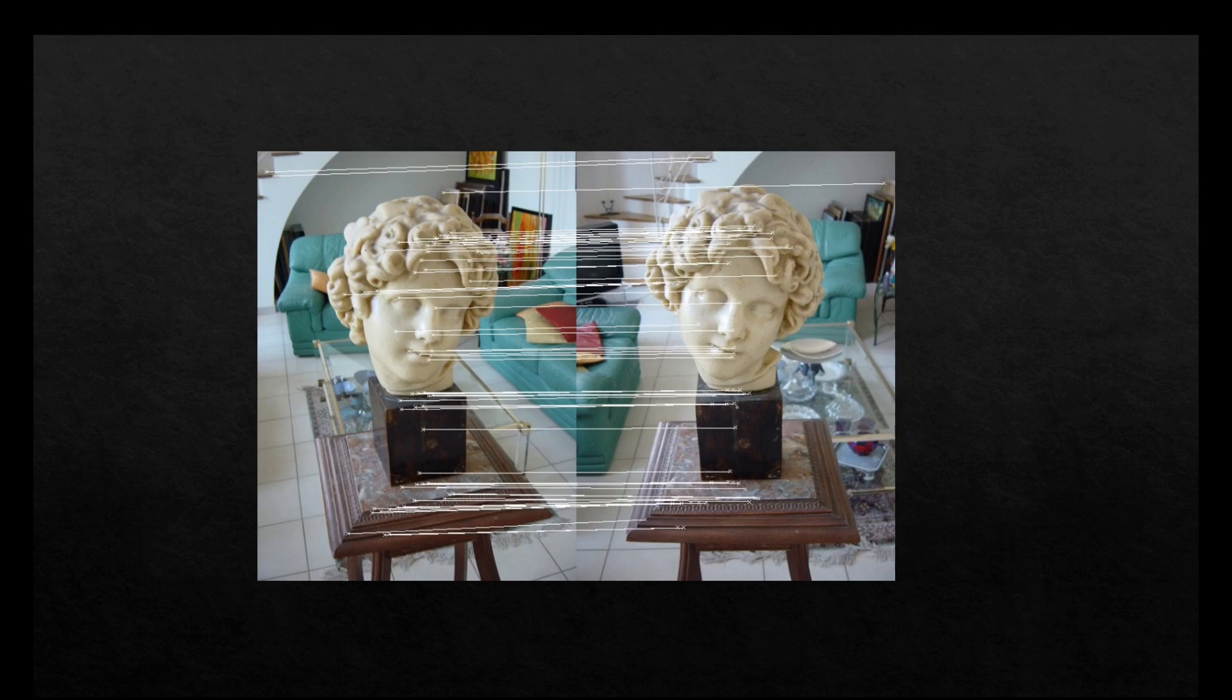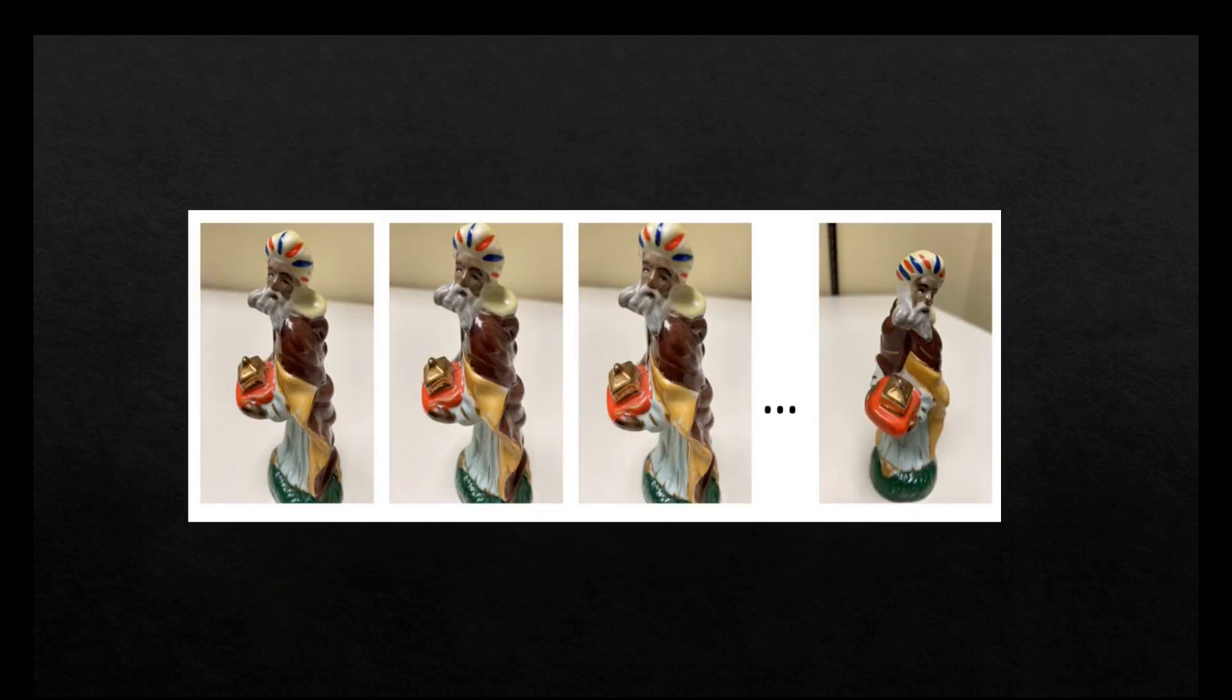RANSAC is also the algorithm that is usually used to remove the outlier correspondences. The feature trajectories over time are then used to reconstruct their 3D positions and the camera's motion. In this video I'm using MATLAB to build the 3D model of the following object. These images are taken at a few different angles.